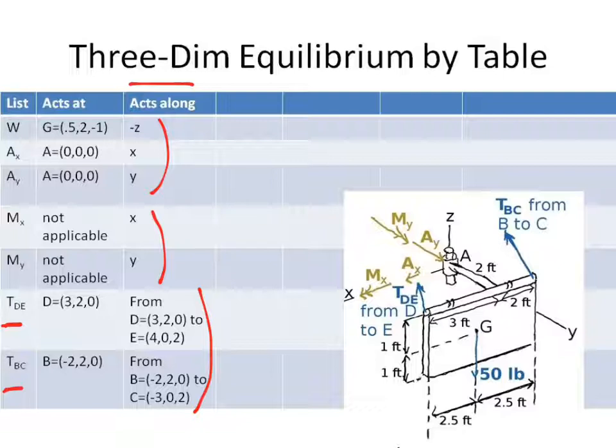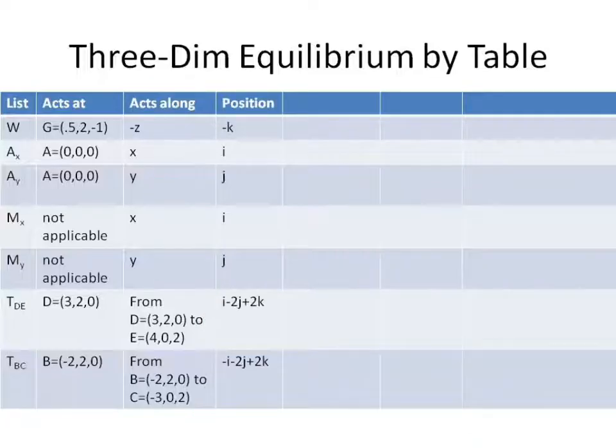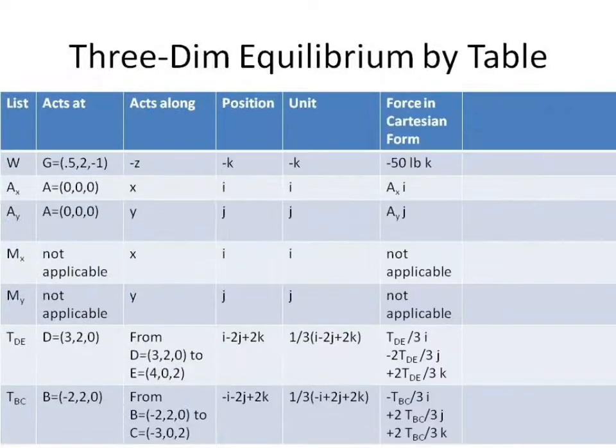How do you do this? How do you go from where it acts, and what it acts along, to a force in Cartesian form? Position vector, unit vector, multiply. This is how you're going to run this through.